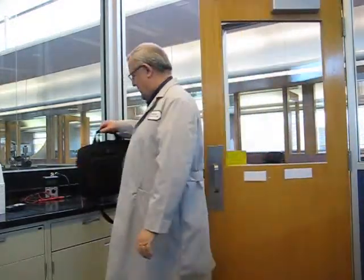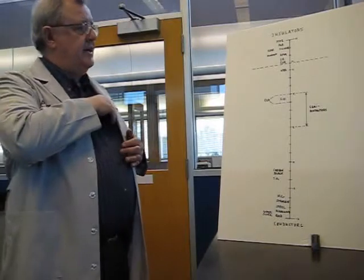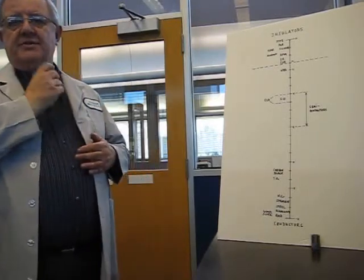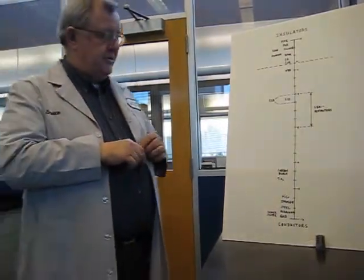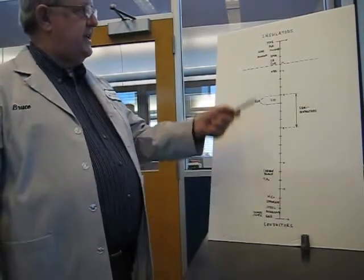Hi again, Bruce Halberg with American Roller Company. I want to review what we talked about last time and basically we're talking about conductors and insulators in terms of materials and pretty much everything on the planet fits on this chart somewhere.